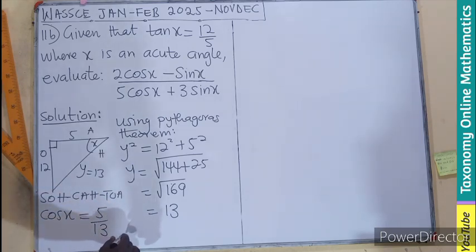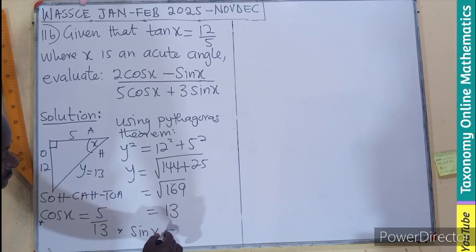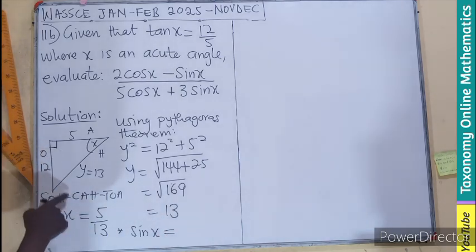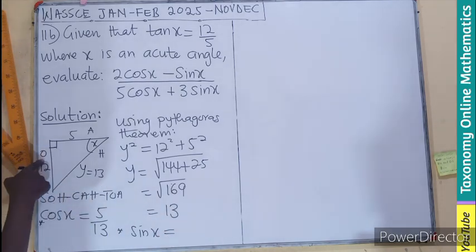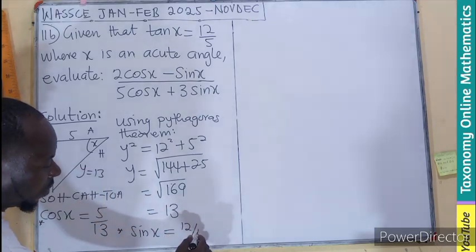Then if you pick, let's put an asterisk here. If I pick the sine of the angle x, which is opposite over hypotenuse, 12 over 13.